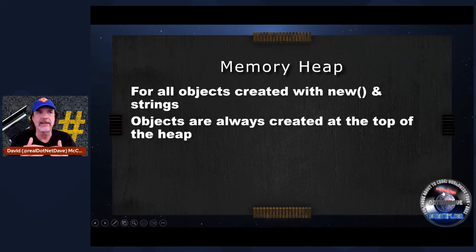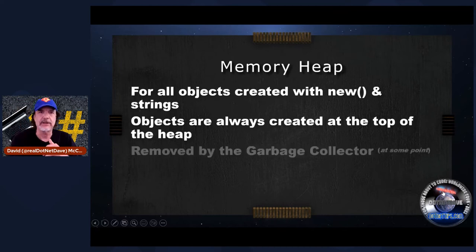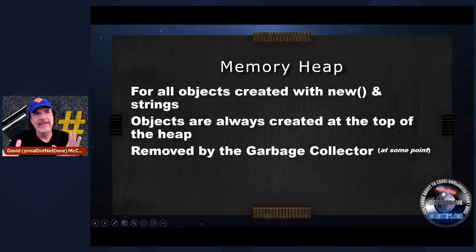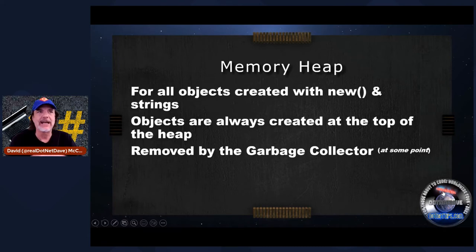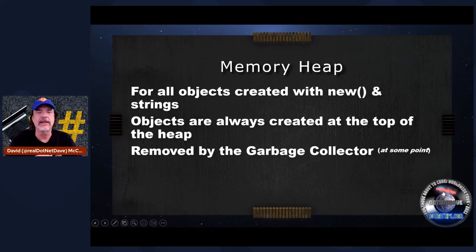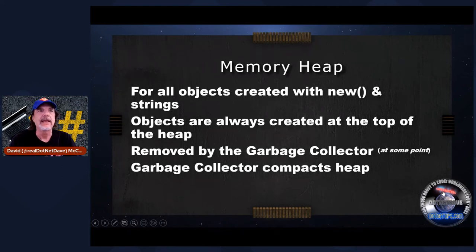Creating objects and reference types on the heap is very, very fast in .NET because they're always created at the top of the heap. They're removed by the garbage collector — when you're done with one of these types, it doesn't get removed at the end of the code block. It gets removed by the garbage collector at some point, and you really don't have a lot of control over this. The garbage collector basically kicks in when it wants to, using rules like memory pressure. So this is why we need to be mindful of how we create and destroy objects in the heap. And at the end of this process, the garbage collector actually compacts the heap, so the next objects are created at the top of the heap.